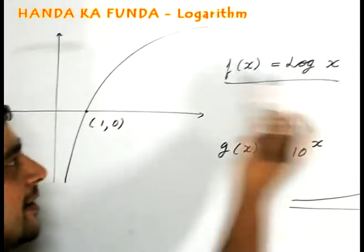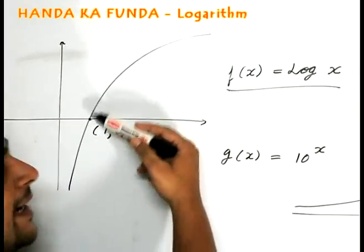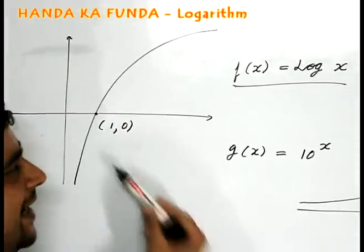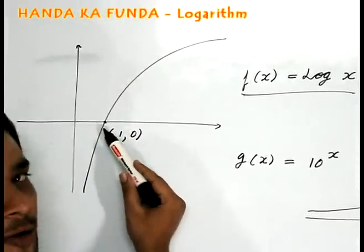If x is greater than 1, then log of anything greater than 1 is going to be positive. If x is less than 1, then it is going to be negative. And log of 1, as we know, is 0.